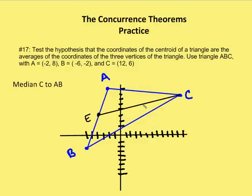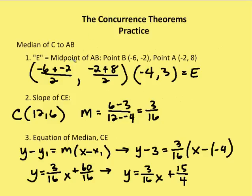Next, we find the median from C to AB, calling the midpoint of AB point E — so the line CE. The midpoint of AB is the average of x and y values: (-6 + -2)/2 = -4, and (-2 + 8)/2 = 3. So midpoint E is (-4, 3). We've been given that C = (12, 6). The slope from C to E is (6 - 3)/(12 - (-4)) = 3/16.